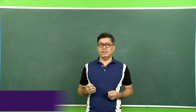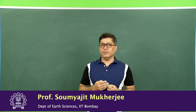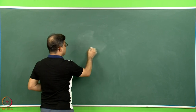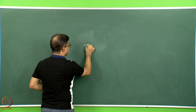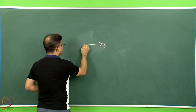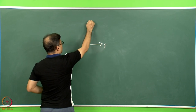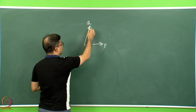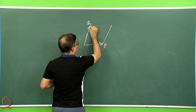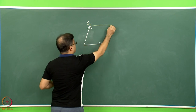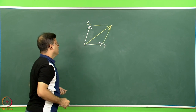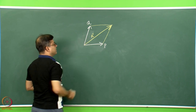We have seen vector addition in our school days. Now we are going to see how this vector addition exercise can be translated into geological cases. If on a horizontal plane or on a planar surface there is a vector P acting and then there is another vector Q acting, the resultant can be obtained by constructing a parallelogram and joining from one point to the other with an arrow — that is the resultant.